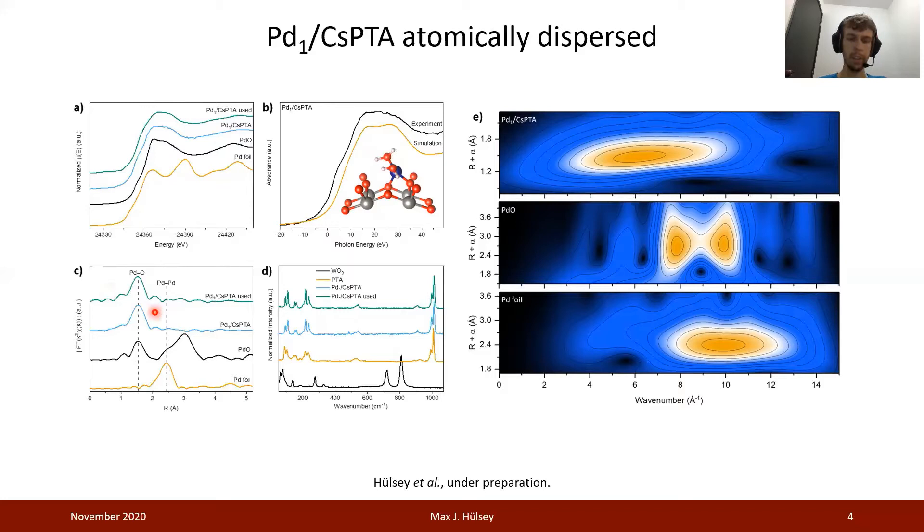Extended fine structure analysis confirms that there is indeed no palladium-palladium scattering, and also there is no higher-order palladium-oxygen scattering, which essentially means that there is neither metallic palladium nor palladium oxide nanoclusters and nanoparticles present in our catalyst. Raman spectroscopy confirms the stability of the polyoxometalate even after reductive treatment. Wavelet transformation analysis again serves to confirm that our palladium single-atom catalyst does not include any palladium-palladium scattering contributions, which would occur at wave numbers around 10 inverse angstrom, whereas we only see palladium-oxygen contributions here at roughly 6 inverse angstrom.